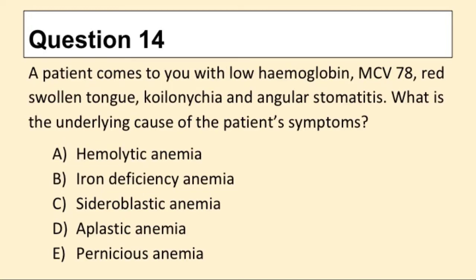Question 14. A patient comes to you with low hemoglobin, MCV of 78, red swollen tongue, koilonychia, and angular stomatitis. What is the underlying cause of the patient's symptoms?